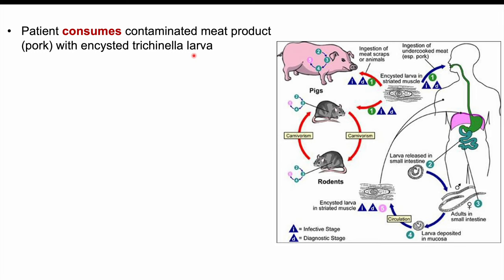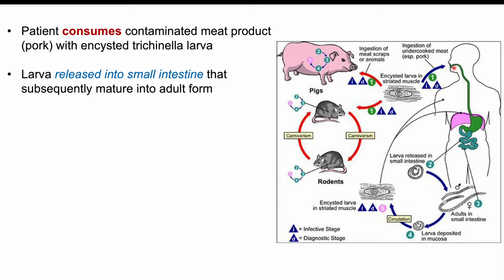This encysted larva is in the striated muscle — the meat of the animal. When a human eats that encysted larva, it goes through their esophagus into their stomach and enters the small intestine. The larva is then released into the small intestine and subsequently matures into an adult form of the Trichinella species.